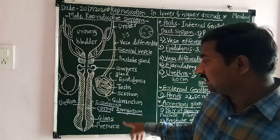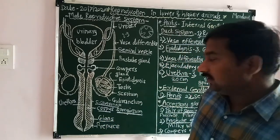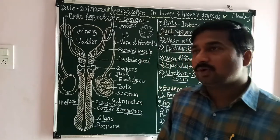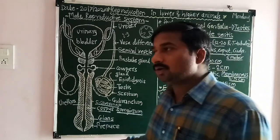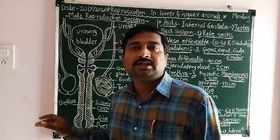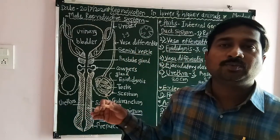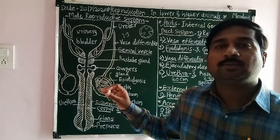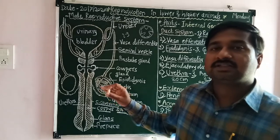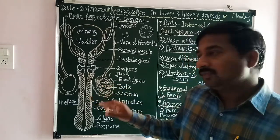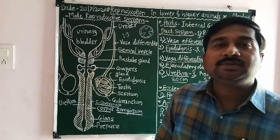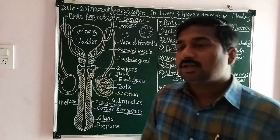The penis is a sensitive part and is covered by a skin fold. That skin fold which covers the tip of the penis, that is the glans penis, is called the foreskin or prepuce. The penis acts as the main copulatory organ.